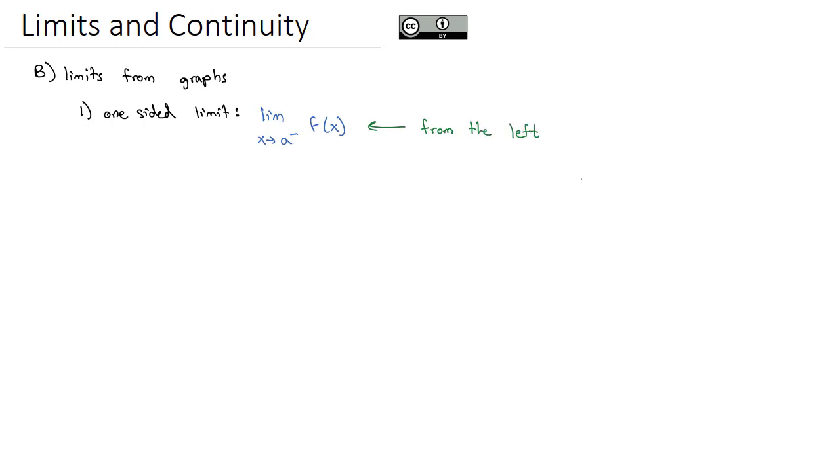In other words, if we started at negative infinity and got closer and closer to this number, what are we getting close to just from the left? If I see the limit as x approaches a from the positive side, that means we're only coming in from the right. In other words, we're starting at positive infinity and coming closer and closer to the function, what are we getting close to?